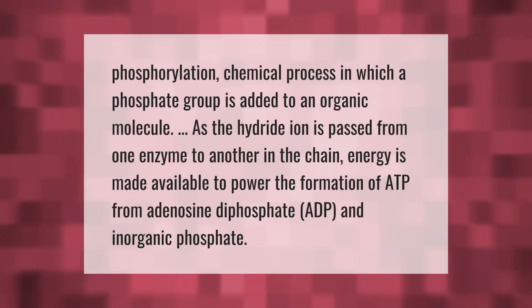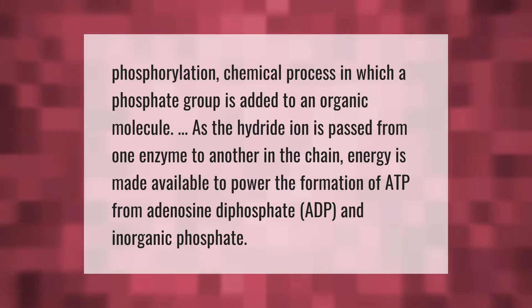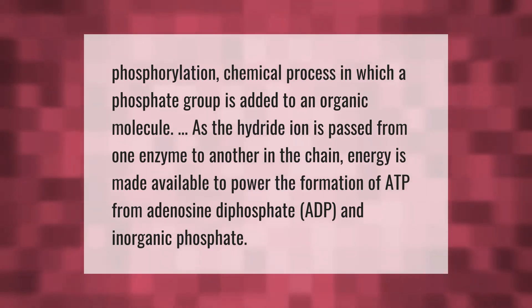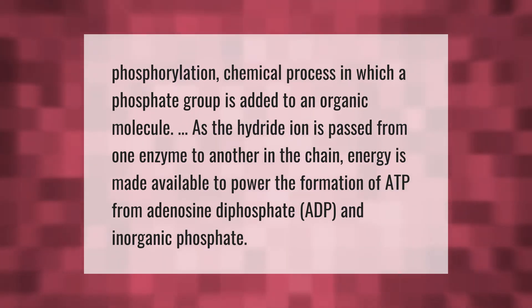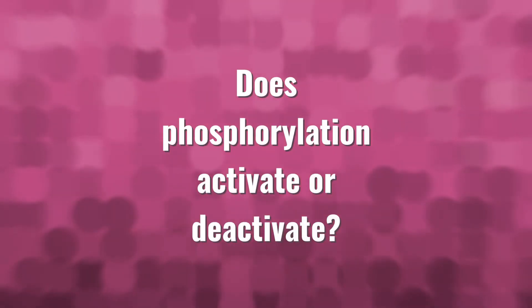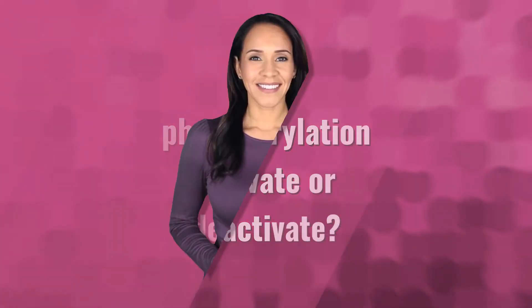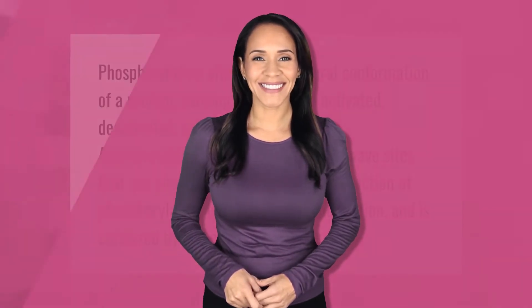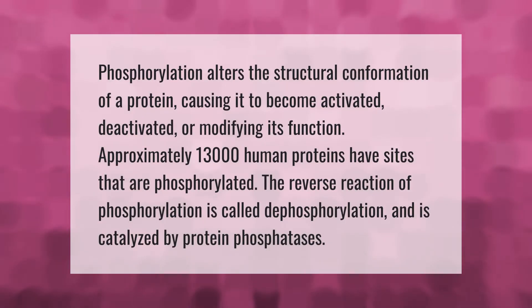Phosphorylation is a chemical process in which a phosphate group is added to an organic molecule. As the hydride ion is passed from one enzyme to another in the chain, energy is made available to power the formation of ATP from adenosine diphosphate (ADP) and inorganic phosphate.